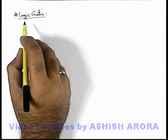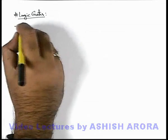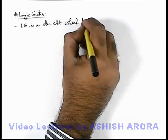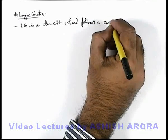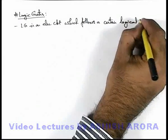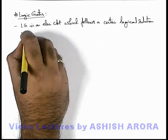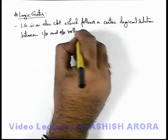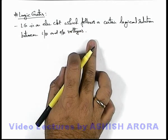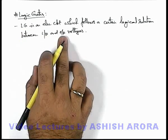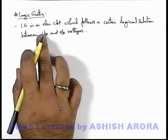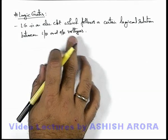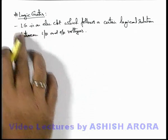Let us now write some basic things about logic gates. As we already discussed, a logic gate is an electronic circuit which follows a certain logical relation between input and output voltages. This statement also signifies that in a logic gate, there are one or more input signals and there may be one or more output signals. Input and output voltages are combined by a logical relation, and the whole circuit performing this action of transforming output voltages from input voltages is termed as a logic gate.